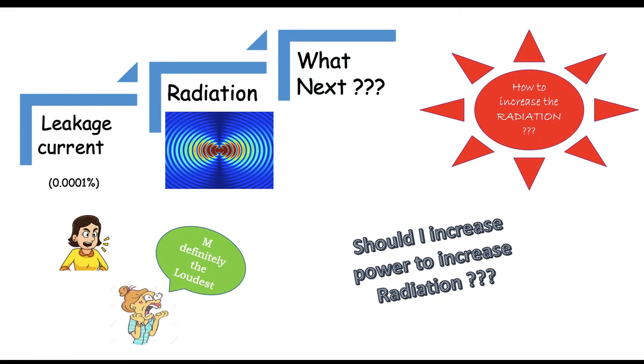Can I use the same logic here? If I increase the power with which the source is throwing out energy, by the time it comes out the leakage current will also be more, and hence more radiation. Which basically says: increase the power to increase the radiation. As simple as that — increase the power at the input, radiation increases, and hence my distance covered increases.